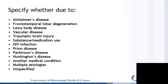The DSM-5 asks us to specify whether a particular Neurocognitive Disorder is due to Alzheimer's Disease, Frontotemporal Lobar Degeneration, Lewy Body Disease, Vascular Disease, Traumatic Brain Injury, Substance or Medication Use, HIV Infection, Prion Disease, Parkinson's Disease, Huntington's Disease, Another Medical Condition, Multiple Etiologies, or whether the disease etiology is unspecified.